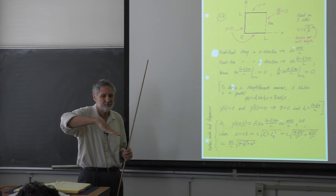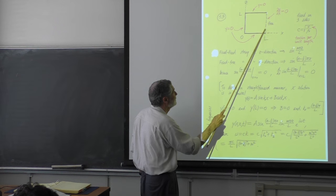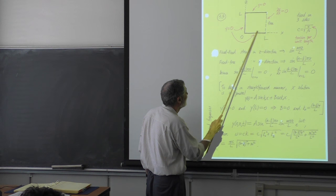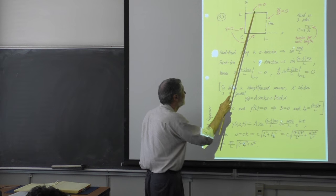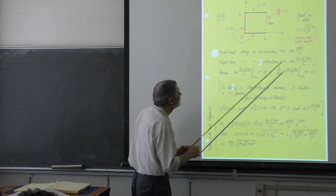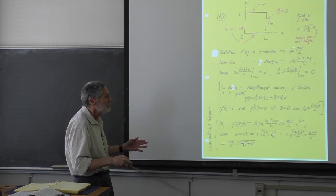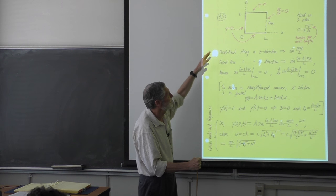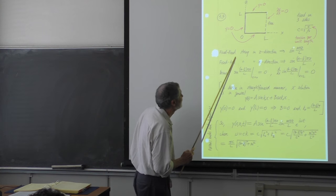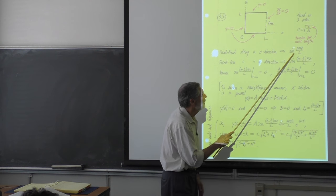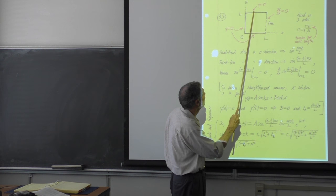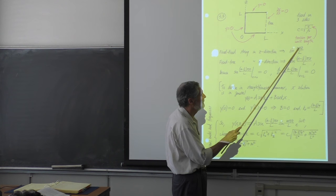We're going to have a quarter wavelength in the free direction. The fundamental going the other way is one sinusoid - that's the fundamental in the fixed-fixed direction. In general, we can just use the theory - we know we need to multiply the two waveforms, the x waveform and the z waveform. In the z-direction we have a fixed-fixed string: the waveform is the sine of kz where k = mπ/L, starting with a half wavelength, one wavelength, three halves.